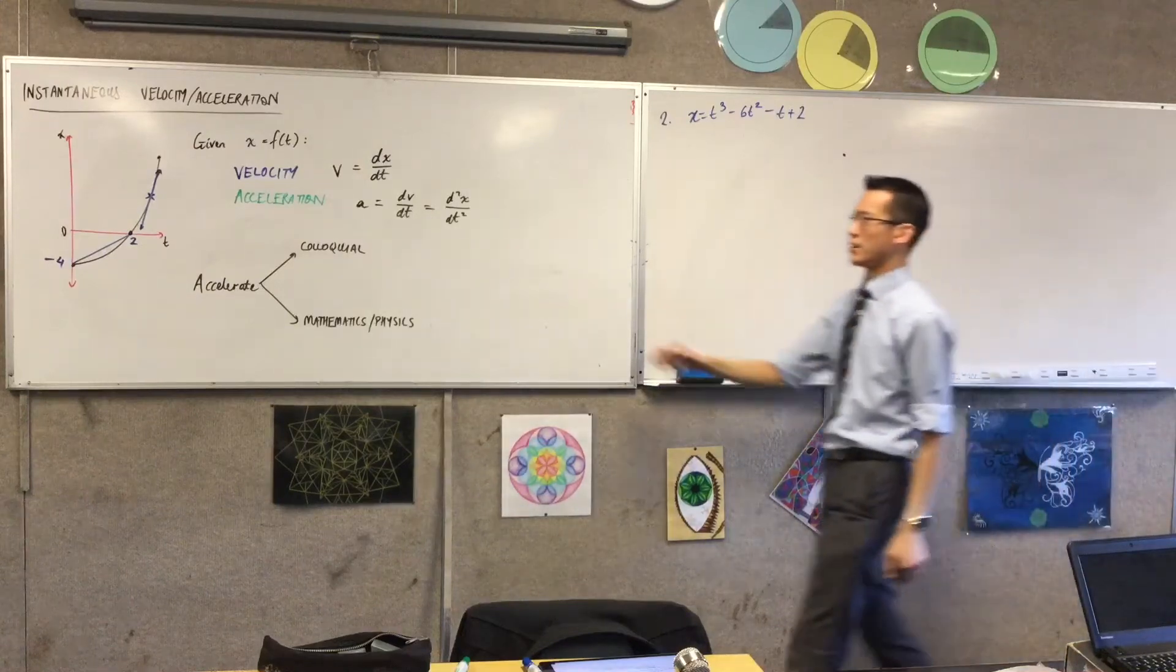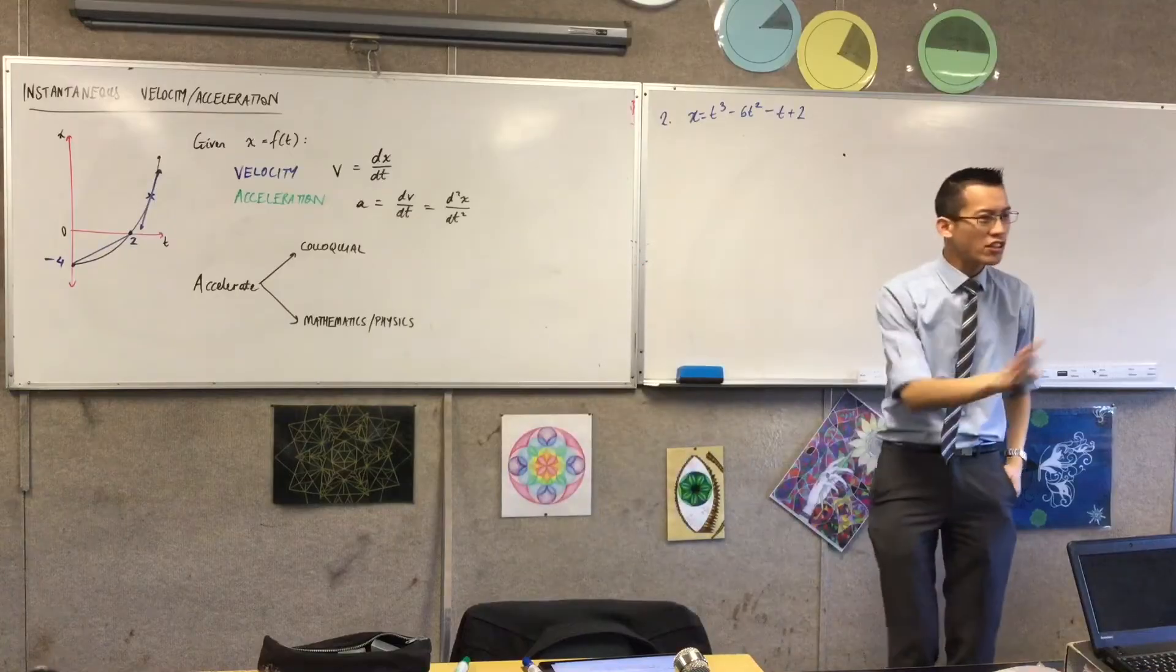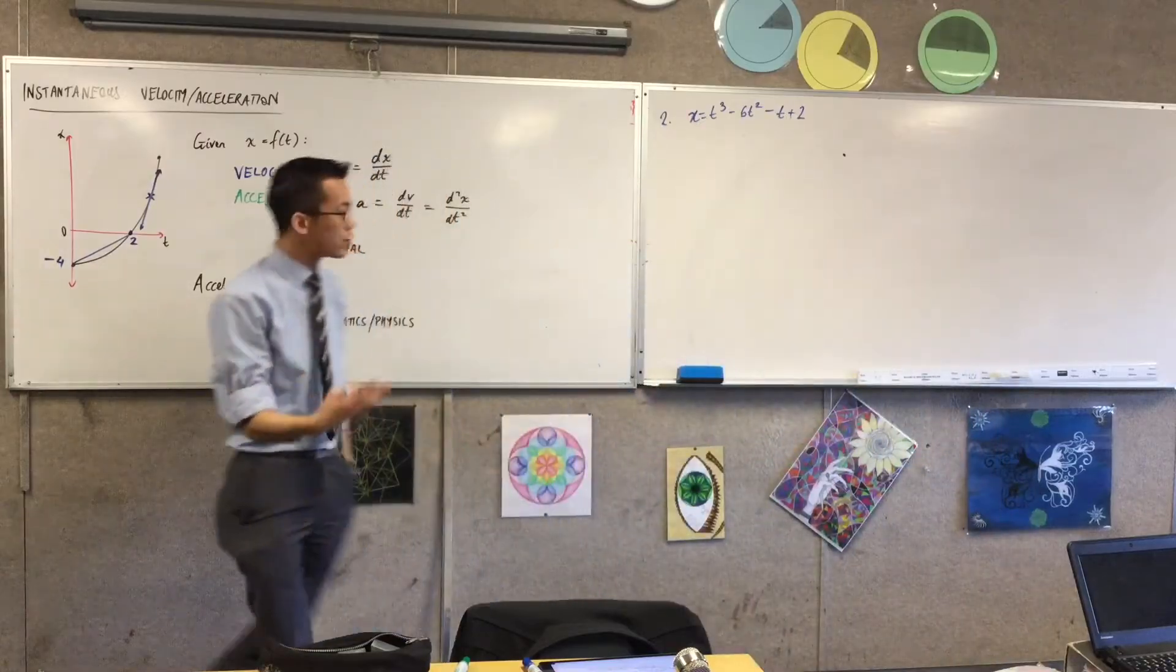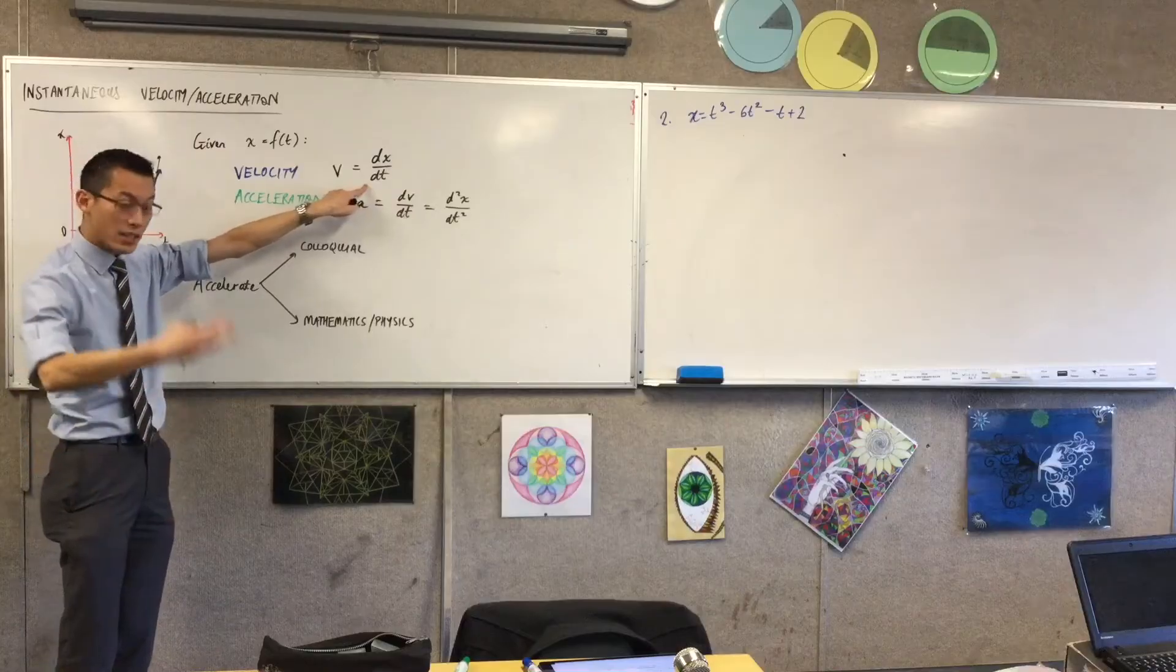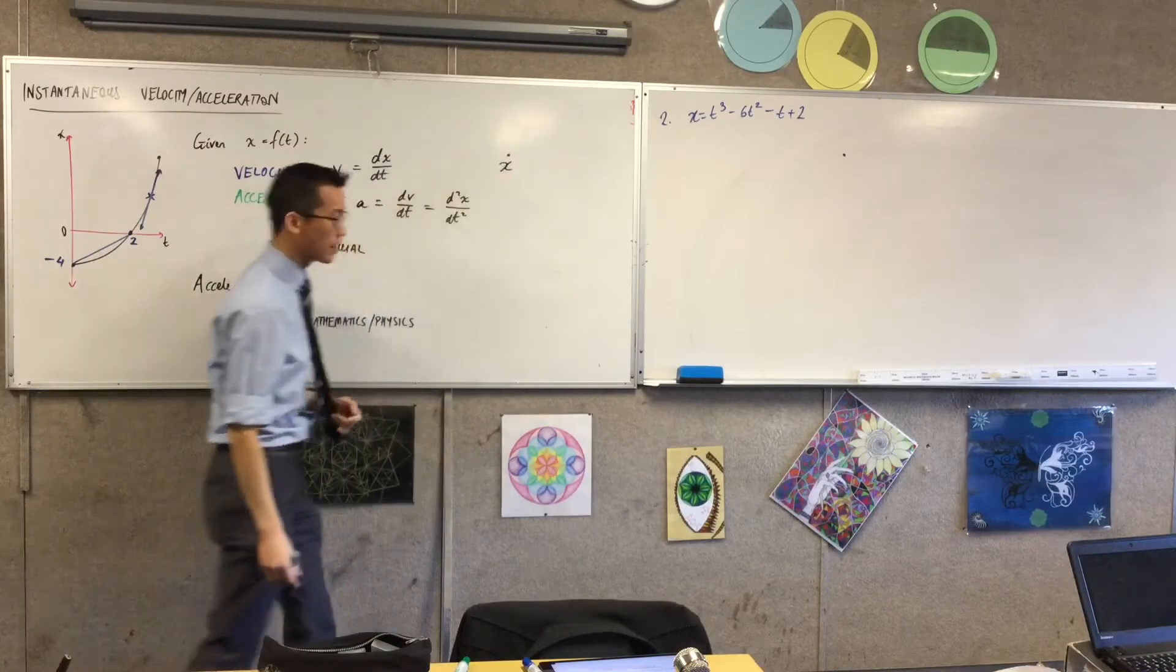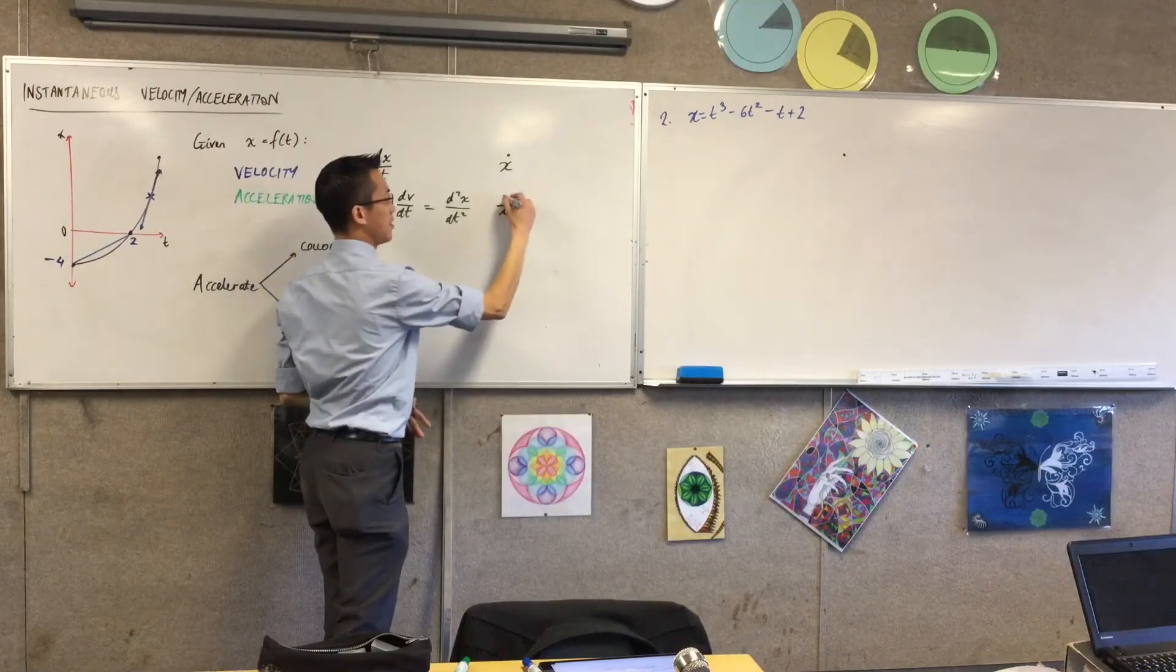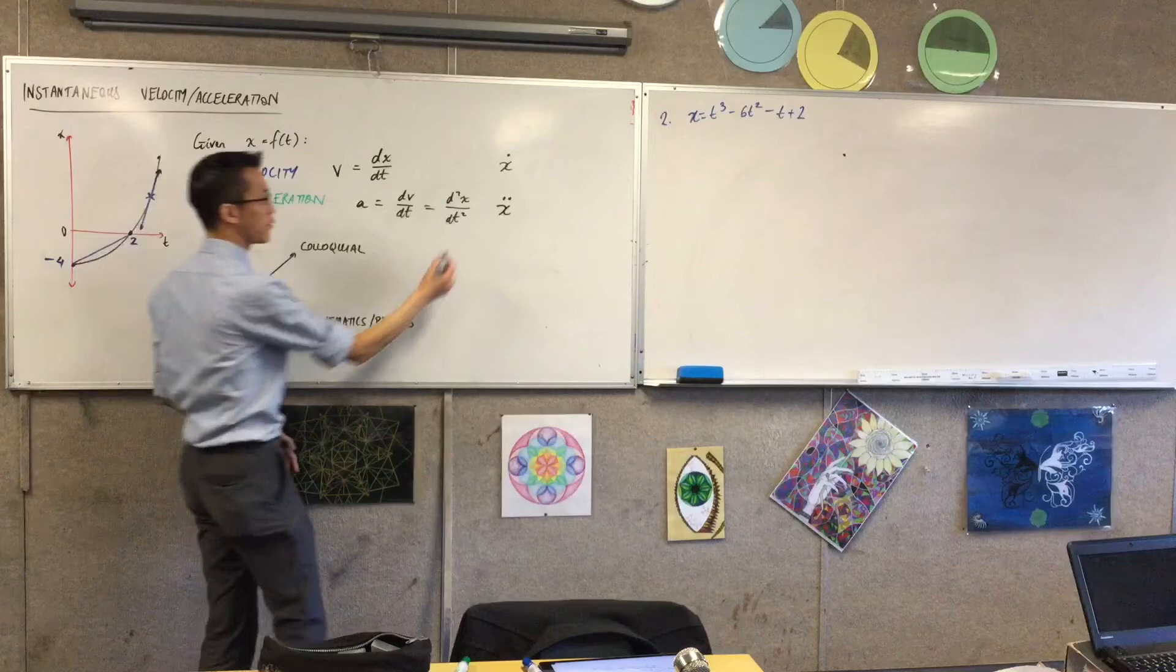Now because this starts to get a little bit cumbersome, and physicists who want to use this, they're not actually worried about the calculus. They just, once they get the formulas, they just use them, and they don't worry about actually the nuts and bolts of the algebra and so on. They introduce different kinds of notation which indicate this is really about x, displacement changing over time. They call it x dot, and this is how x's change over time is changing over time. So they call it x double dot. And you'll see all of these forms of notation.